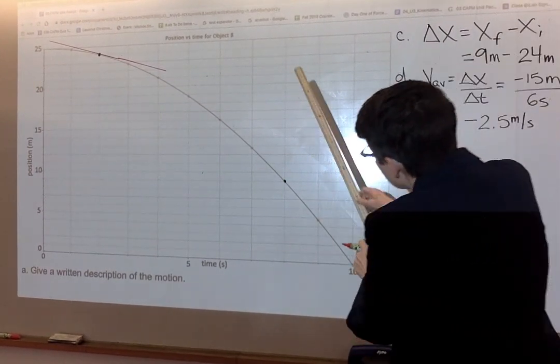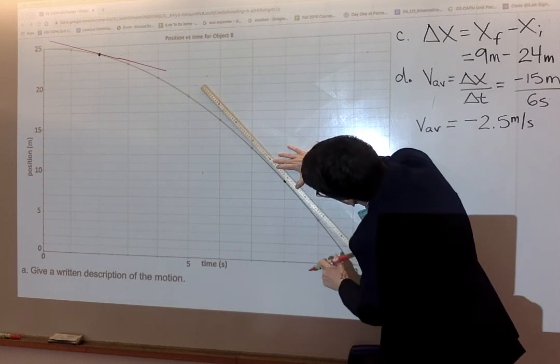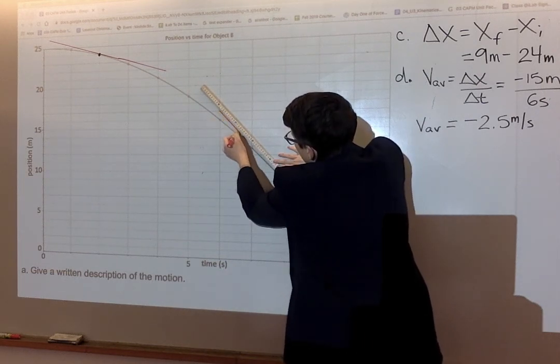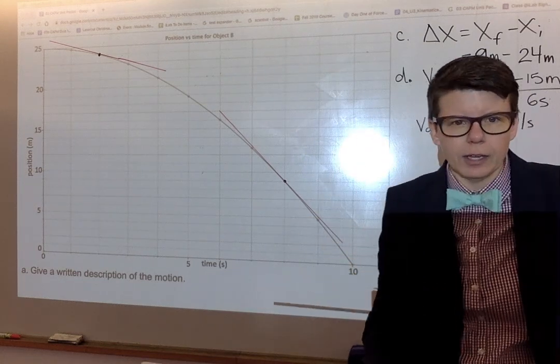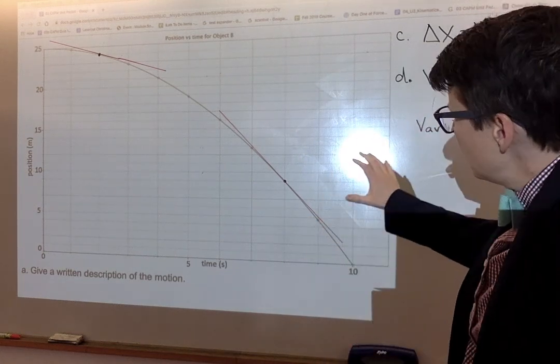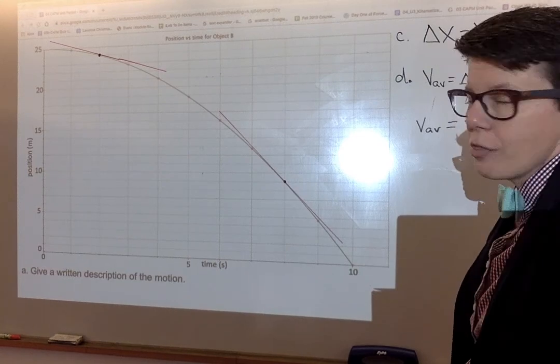The eight-second mark is here. The slope of that line will be the instantaneous velocity at those two moments.